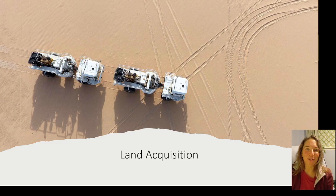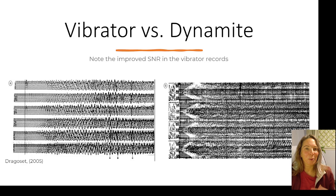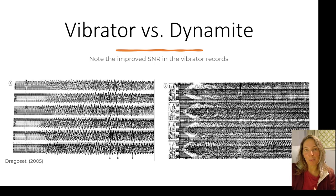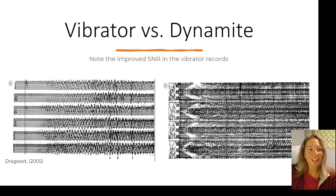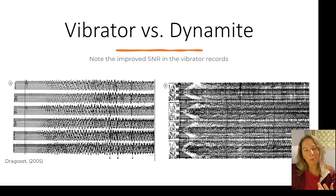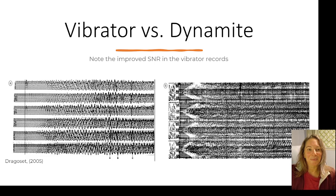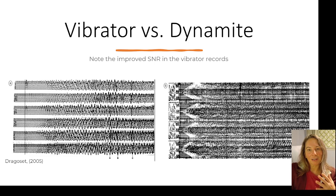Now I'm going to talk about land acquisition for a few minutes. There are two common ways that we have been able to acquire land data — energy sources. Vibrator, which is more common nowadays, and dynamite, which is a little bit of an older technology. Here we've got a comparison between records from a very early vibrator and dynamite shots.